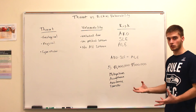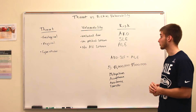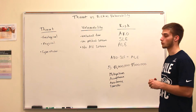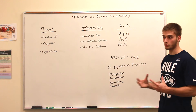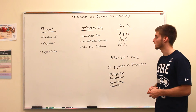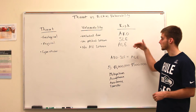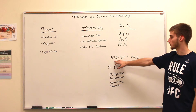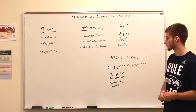Risk is essentially a combination of both those. The rate at which a vulnerability would be exploited is the annual rate of occurrence (ARO). The single loss expectancy (SLE) is the expected dollar amount for a single attack or event. To find the annual loss expectancy (ALE), we multiply the annual rate of occurrence by the single loss expectancy.